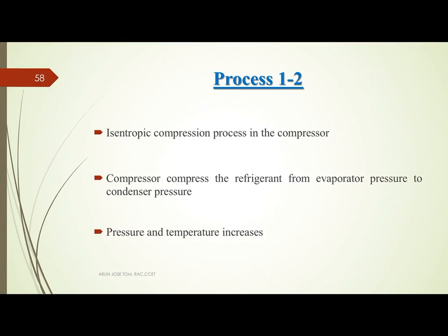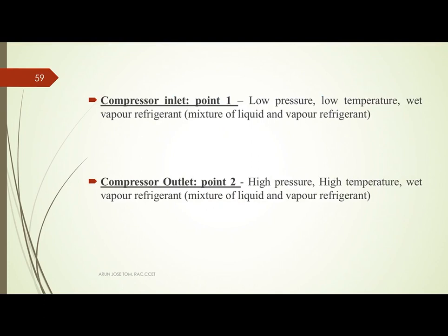The first process is process 1 to 2 — isentropic compression in the compressor. The compressor compresses the refrigerant, which leads to an increase in pressure and temperature, from evaporator pressure to condenser pressure. Point 1 is the inlet condition to the compressor, and point 2 is the exit condition. At point 1, the condition of the refrigerant is low pressure, low temperature wet vapor — a mixture of liquid and vapor.